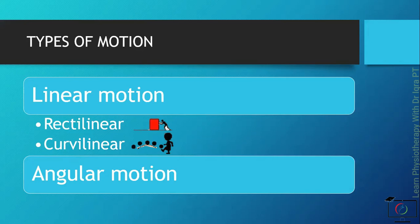Angular motion, also known as rotatory motion, is motion around a fixed axis, like the rotation of a fan. In the human body, rotation of the neck is an example of angular movement.